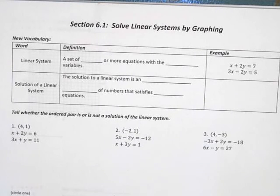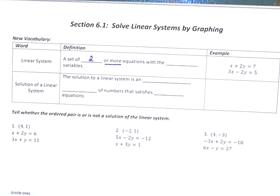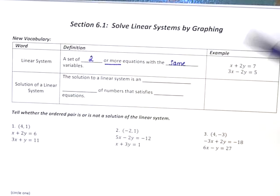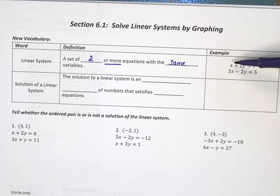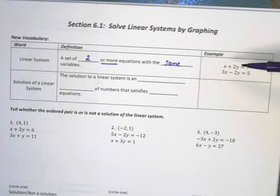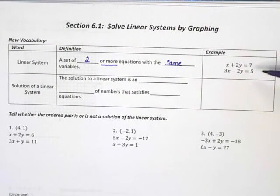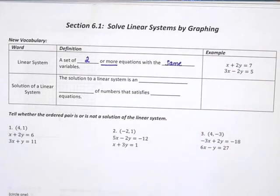First let's talk about what exactly is a linear system. A linear system is a set of two or more equations that have the same variables. For example, if you look at this first equation, we've got one variable x and another variable y. The second equation also has an x and a y in it. Because we have two equations that both have x's and y's, we would call this a linear system.